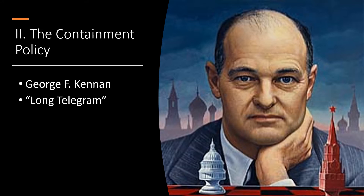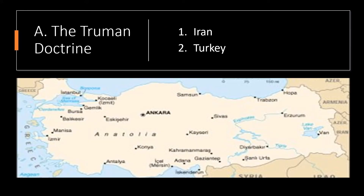Containment was viewed as a defensive measure against a ruthless adversary. Secretary of State George C. Marshall agreed with Kennan's analysis but sought a political approach to containment, whereas Kennan focused on military solutions.